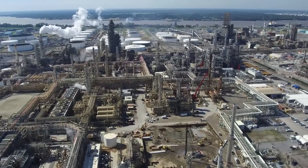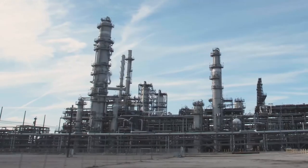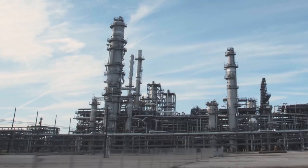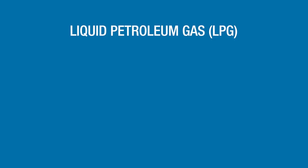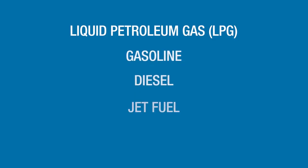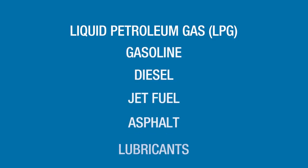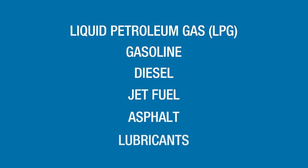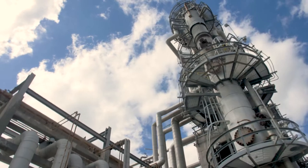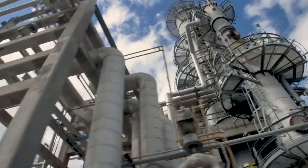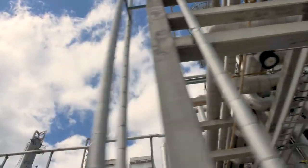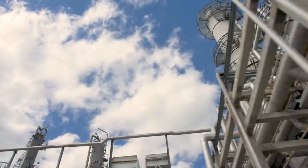Refineries convert crude oil and other liquids into petroleum products that people use every day. Products such as liquid petroleum gas or LPGs, gasoline, diesel, jet fuel, asphalt, and lubricants, just to name a few. These products are produced by distilling crude oil and cracking or reforming the recovered fractions.